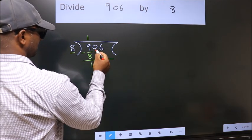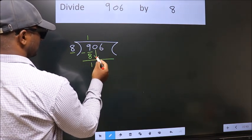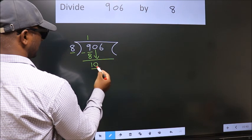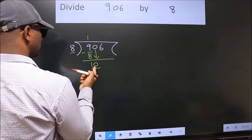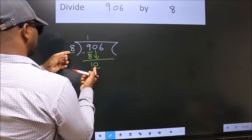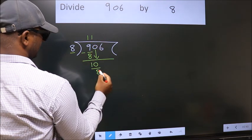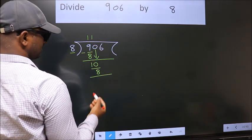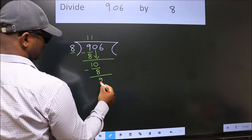After this, bring down the beside number. So, 0 down. So, 10. A number close to 10 in 8 table is 8 once 8. Now, we subtract. We get 2.